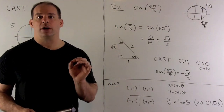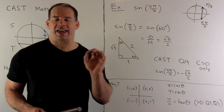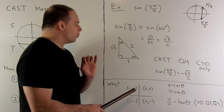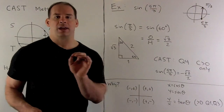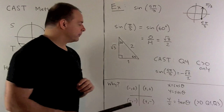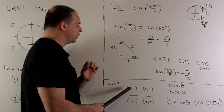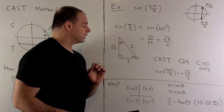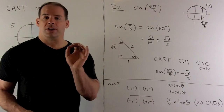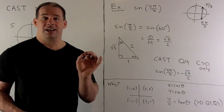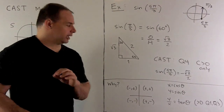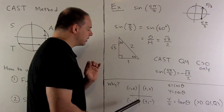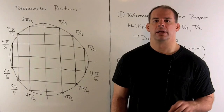Why does CAST work? Cosine is the x-value and sine is the y-value for the angle on the unit circle. CAST is simply recording the sign of x and y in each quadrant: Q1 is (+,+), Q2 is (−,+), Q3 is (−,−), Q4 is (+,−). For tangent, tan = y/x, so tangent is positive only when both x and y have the same sign — that's Q1 and Q3, which is exactly what CAST gives.